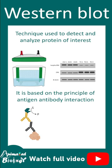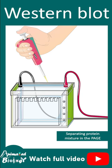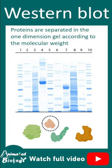In the first step, the gel is run where the protein is basically separated based on its molecular weight. So among these proteins present in the gel, we need to find whether our protein of interest is present or not, and that is detected using an antibody.